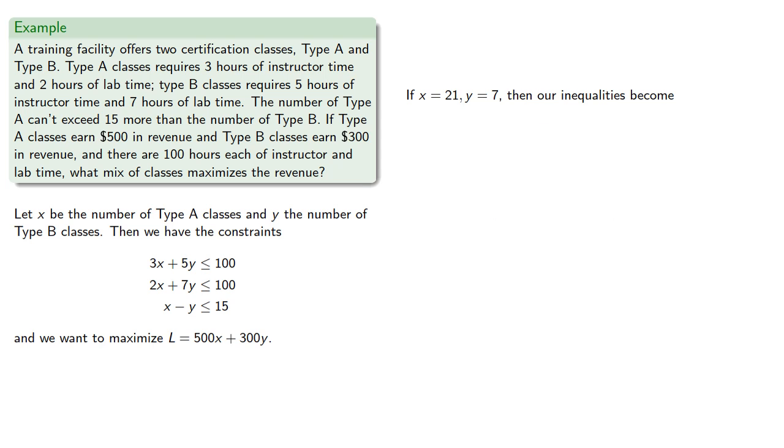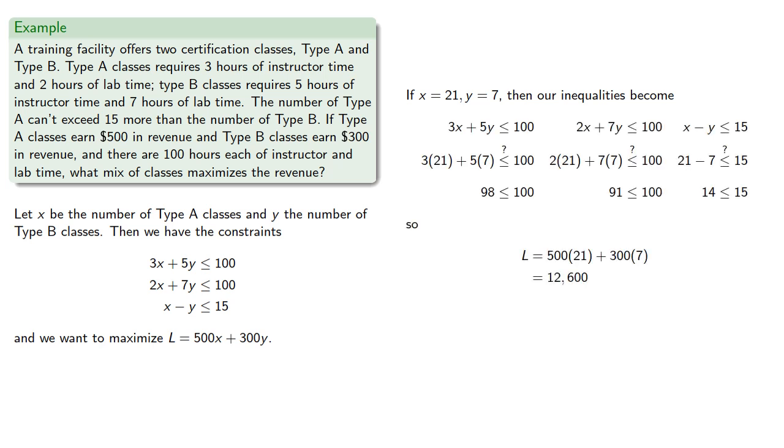If X equals 21, Y equals 7, then our inequalities become, so all the inequalities are satisfied, and our point is inside the feasible region.